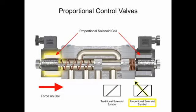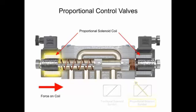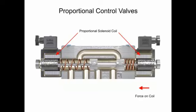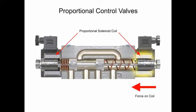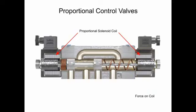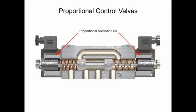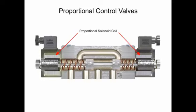The graphic symbol for this type of solenoid shows a slash in the operator box with a sloping arrow through the slash. With proportional valves, the spool can be shifted against the centering spring force to any distance up to full shift by varying voltage and current.